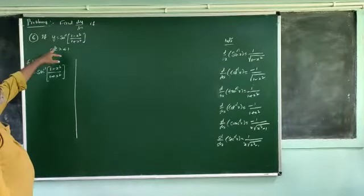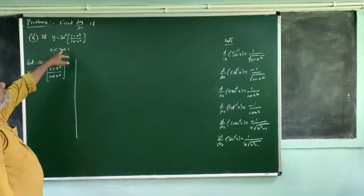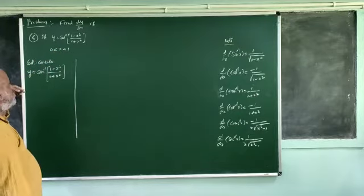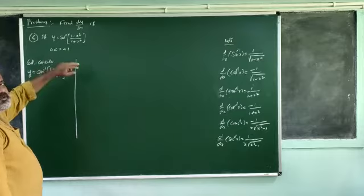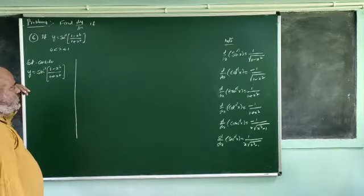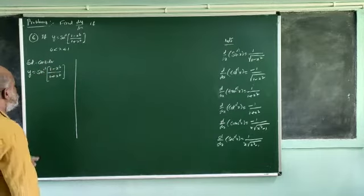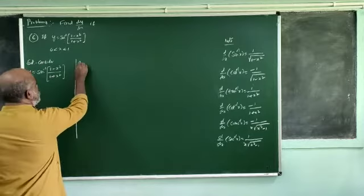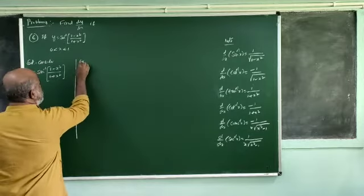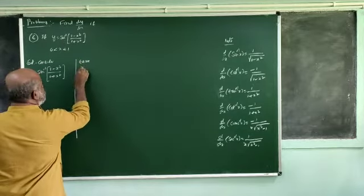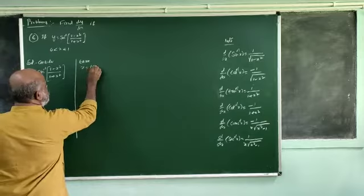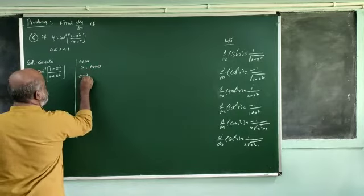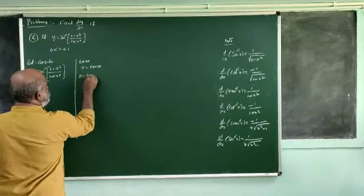Consider y is equal to 1 plus x squared, where x is equal to 0 and 1. The problem gives 1 plus x squared equal to 10, and eta is equal to 10.